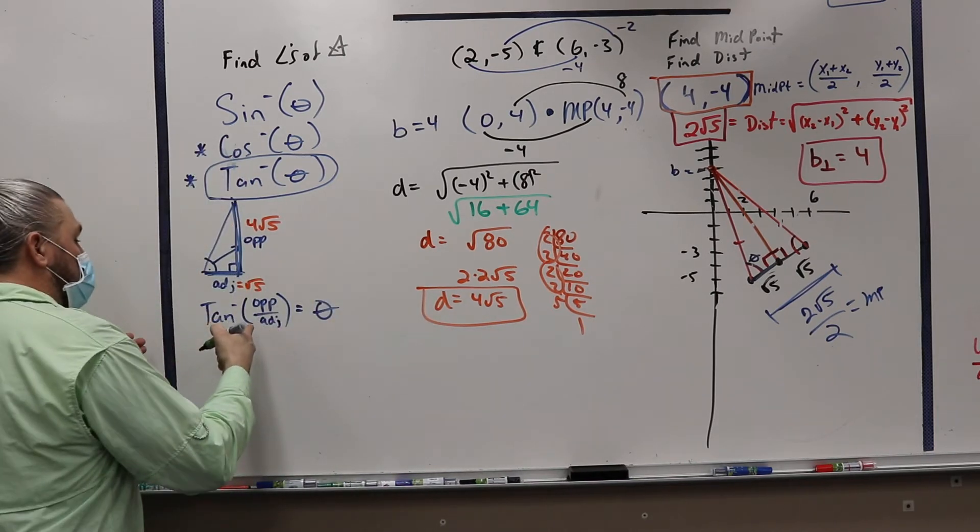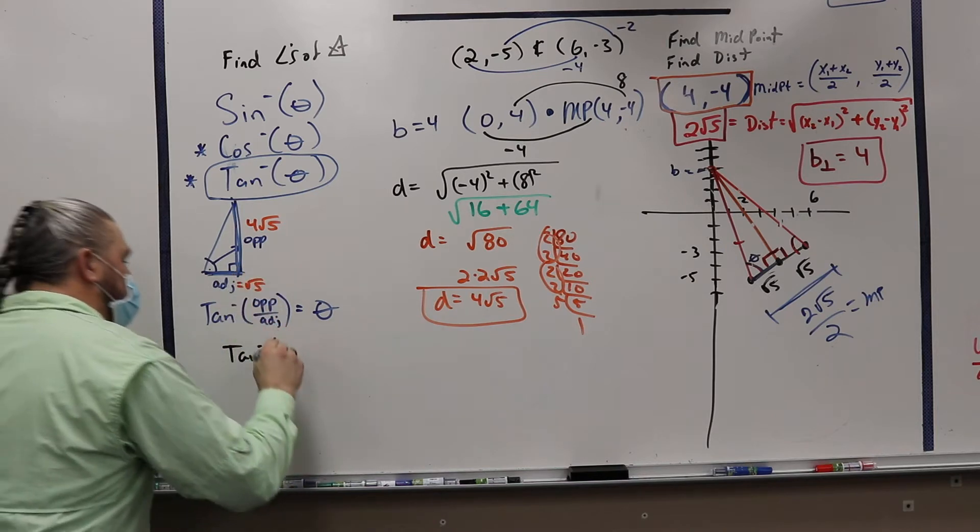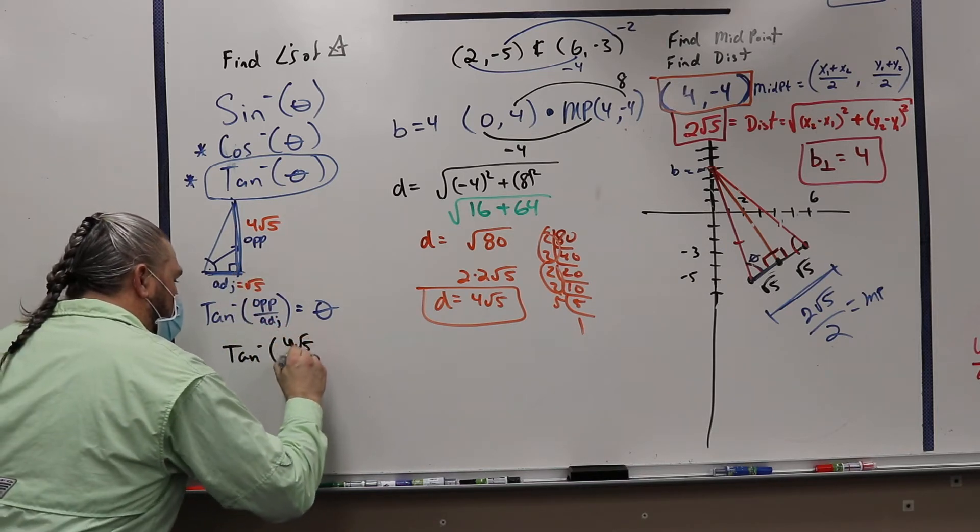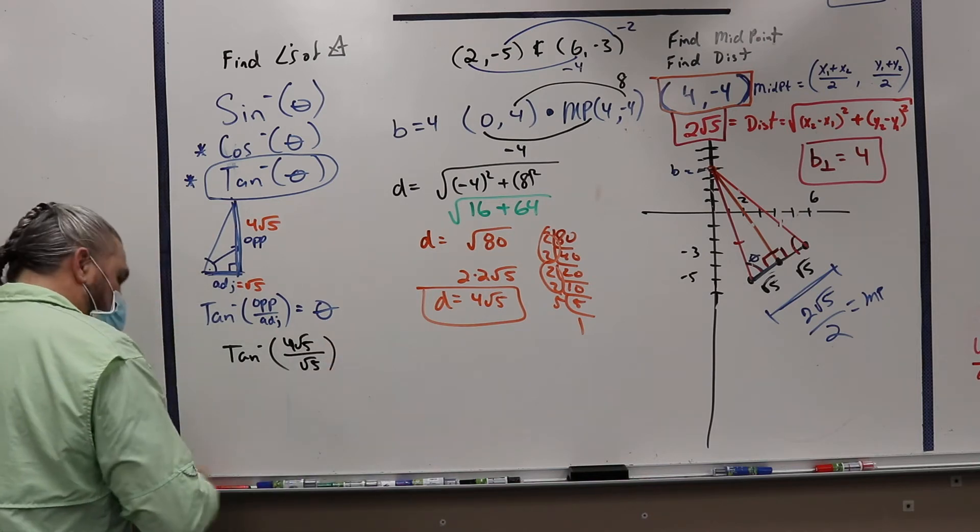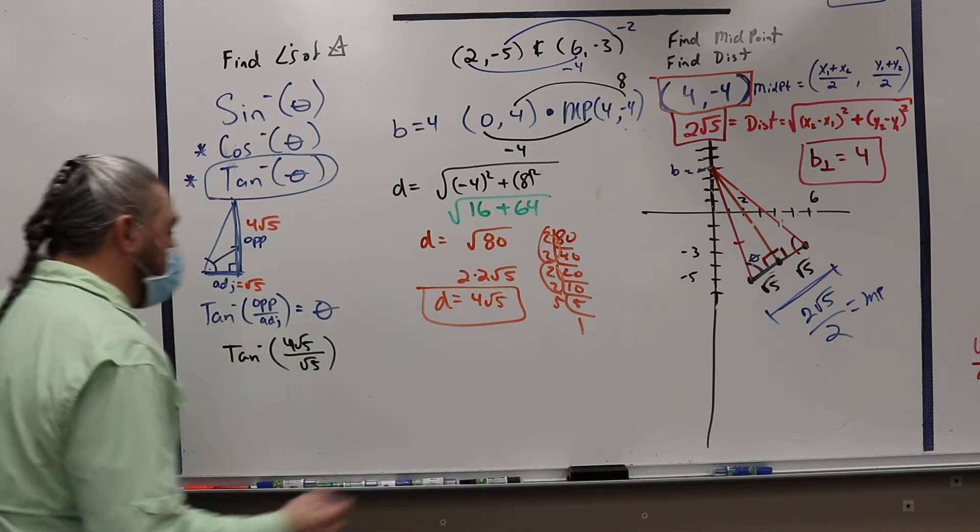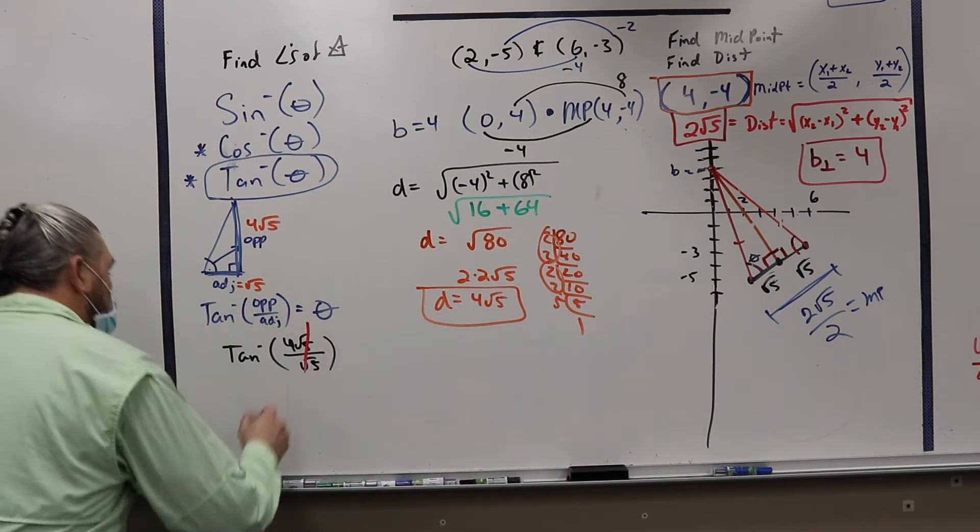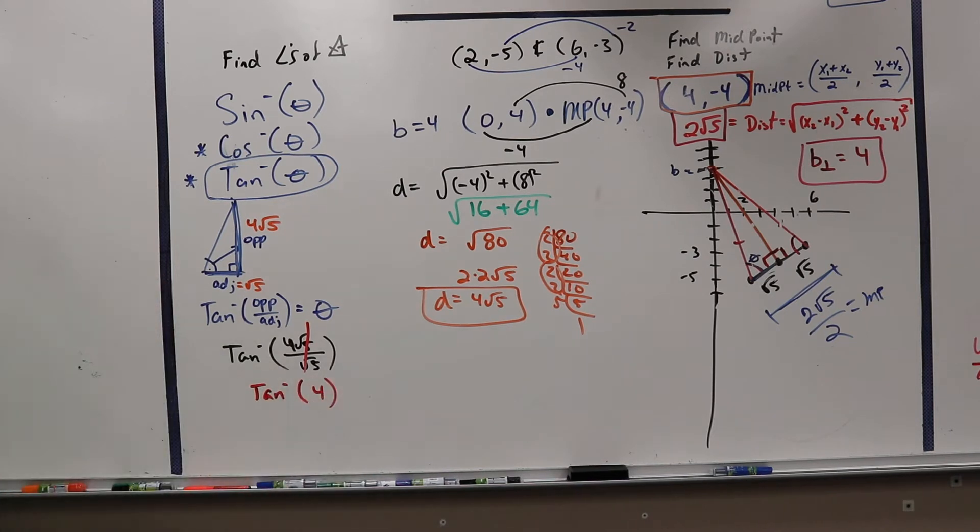Because now, what's the tangent? The tangent inverse is opposite 4√5 over √5, which, if you haven't noticed, the 2 square roots cancel. So it's actually the tangent inverse of 4.